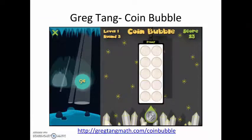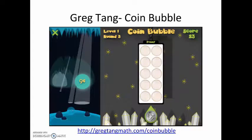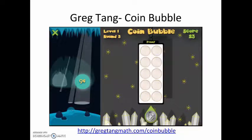Greg Tang offers a great game titled Coin Bubble. During the game, students are asked to select coins to make a specific value. As the levels progress, they are also able to make fair trades from pennies to nickels, nickels to dimes, and so on. Beginning students may only get through the first few levels, making amounts equal to or less than a dollar with pennies, nickels, dimes, and quarters, and may choose smaller coins instead of trading for coins of greater value. More experienced students may begin making fair trades using composition, decomposition, and compensation strategies, and will be making amounts greater than one dollar.